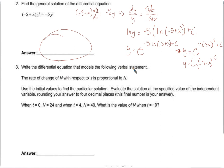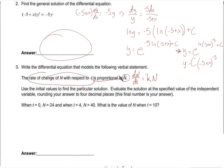Now: a differential equation that models this verbal statement — the rate of change of n with respect to t is proportional to n. 'Is proportional to' means equal to some constant times n, so dn/dt equals kn. We'll use initial values to find the particular solution. First we find the general solution by separating variables: dn over n equals k dt.